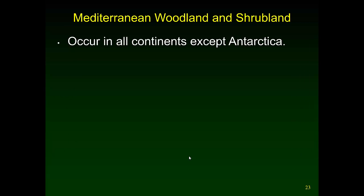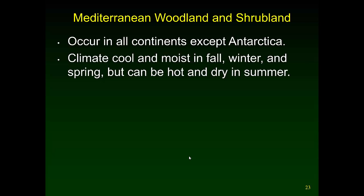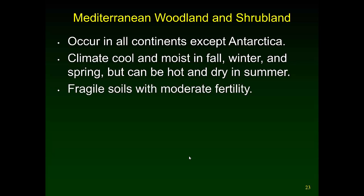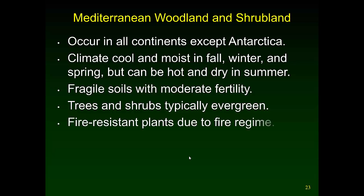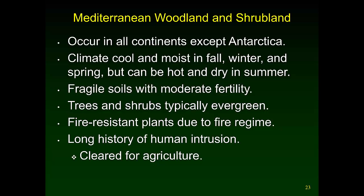Mediterranean Woodland and Shrubland is also called Chaparral in the United States. It occurs on all continents except Antarctica, but is relatively restricted in range. It has a lovely climate — cool and moist in fall, winter, and spring, but hot and dry in summer. The soils tend to be rocky, erode easily, and are fragile, but have moderate fertility. Trees and shrubs are typically evergreen, and many plants have adaptations to fire because this is a fire-prone biome. There's a long history of people living here — around the Mediterranean and in Southern California — so it has been vastly cleared for agriculture.